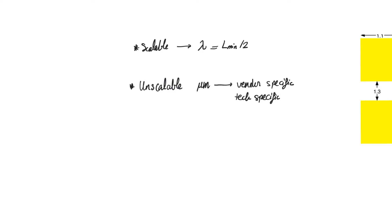However, because scalable design rules are general, they are also very conservative — they use large separations and large dimensions, much larger than actually needed. A vendor-specific set of design rules will be more liberal: they allow you to do more things and will guarantee better yield. We will now discuss a set of scalable CMOS design rules. They are not very practical but they are really good at illustrating what design rules are all about.